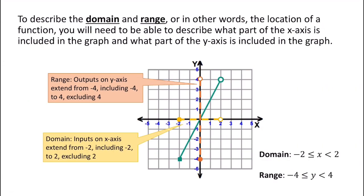What we need to do is talk about how to describe the domain and range. We do this because we're telling someone where our function is located on the coordinate grid — these x values are included in this graph, and these y values are included in this graph. Here, describing this function in green, I've mapped out the x values that are included and the y values that are included. The x values go from negative 2 to 2. The filled-in circle corresponds to a value that's included, and the open circle corresponds to a value that is not included. So I would write negative 2 is less than or equal to x less than 2 — the inequality signs reflect whether a value is included or not.